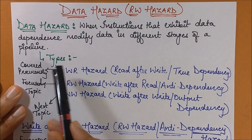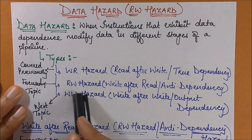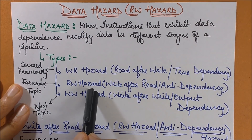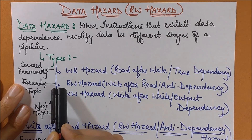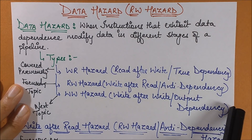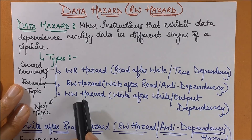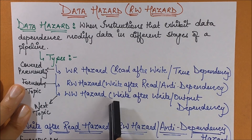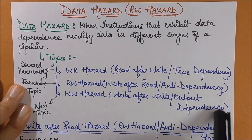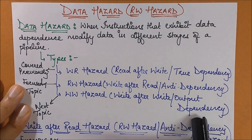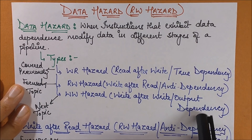Write-read hazard is covered in the previous session — you may please view the previous video in the same playlist. Now we'll discuss read-write hazard, which is also known as write-after-read and the anti-dependency problem. In the next session we'll be taking up the write-write hazard, also known as write-after-write or output dependency. After that we'll also take up control hazard and structural hazard.